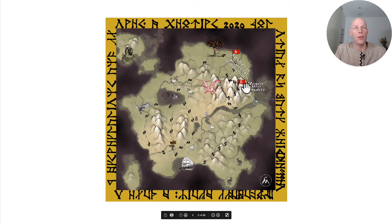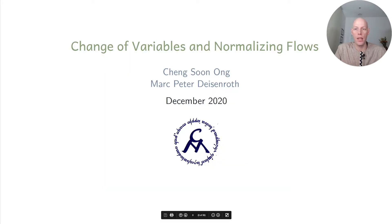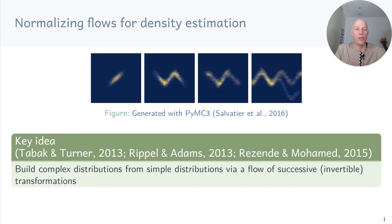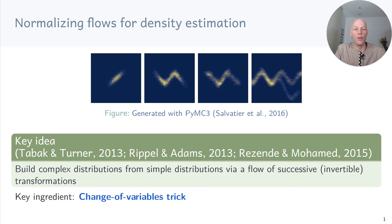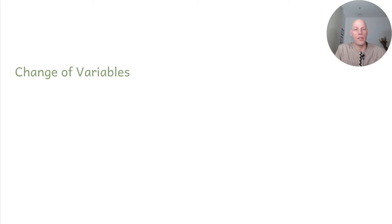Coming down from the Monte Carlo heights, we are now changing our variables and crossing the normalizing flow. In this video, we'll discuss how normalizing flows can be used for density estimation and computing expectations with respect to complex distributions. The key idea behind normalizing flows is to construct complex distributions from simple ones via a flow of successive invertible transformations, and the key ingredient is the change of variables trick.